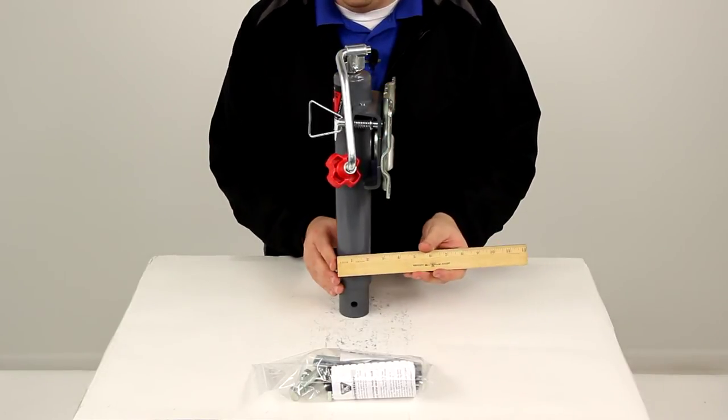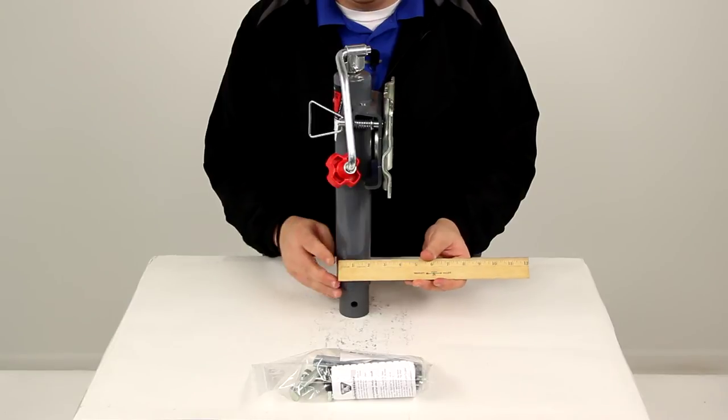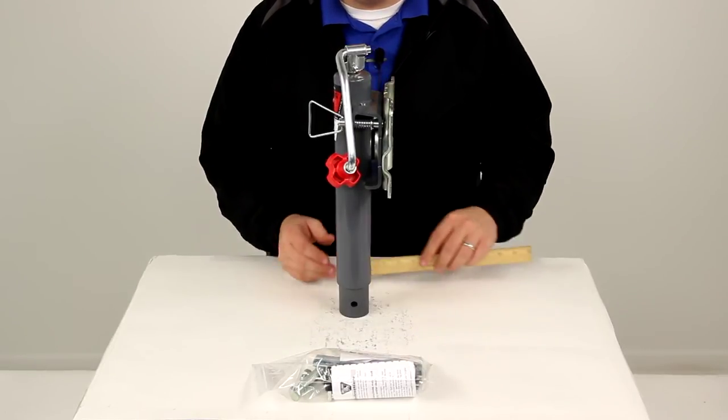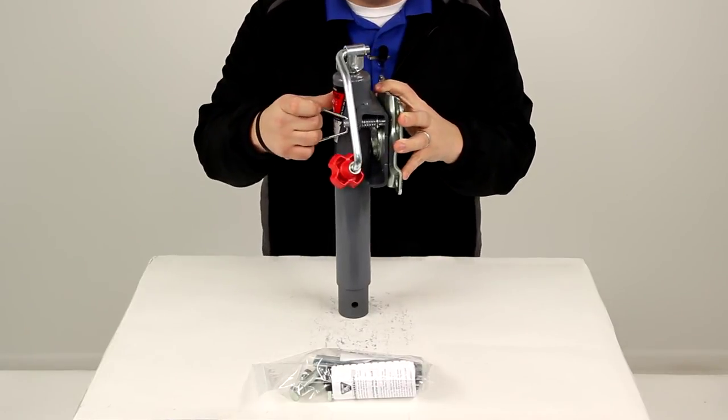The tubing diameter here on the outer tube is going to measure 2 and 1 quarter inches, and on the inner tube it's going to measure 2 inches. And the plunger pin here has a diameter of a half inch.